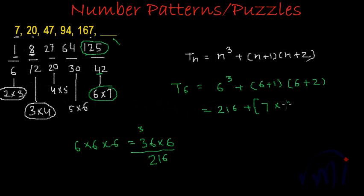Multiplied by 6 plus 2 is 8. So this will be 216 plus 7 times 8, which is 56. And this will be 216 plus 56 equals 272. So the sixth term will be 272.